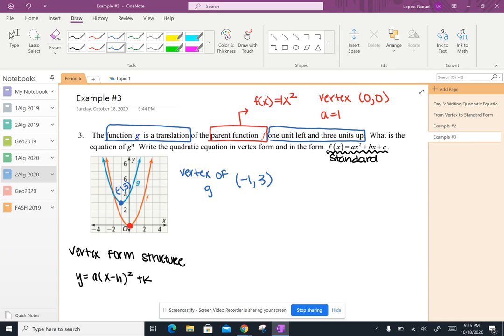So what I'm going to do is plug in -1 in for h and I'm going to plug 3 in for k.